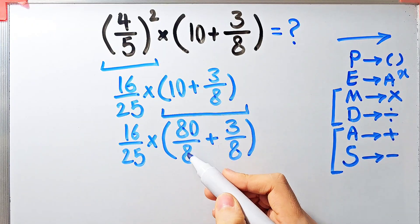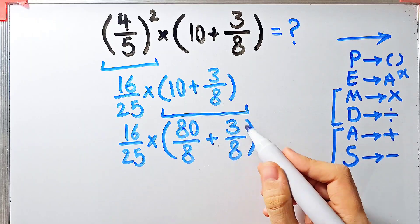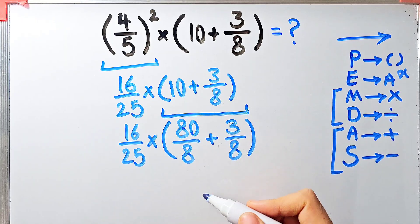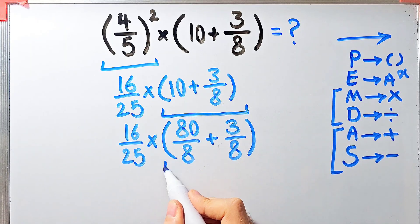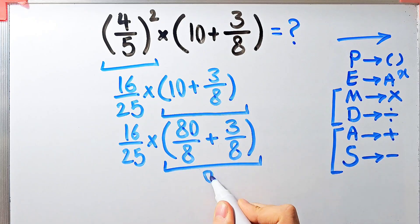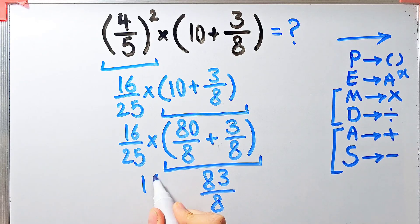The question is now 16 over 25 times open parentheses 80 over 8 plus 3 over 8 closed parentheses. We simplify the parentheses: 80 over 8 plus 3 over 8 equals 83 over 8. Now we have 16 over 25 times 83 over 8.